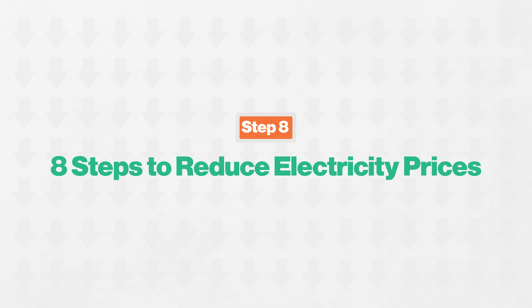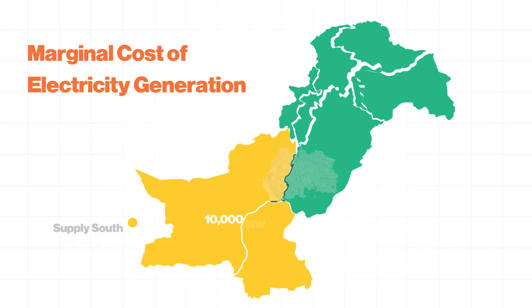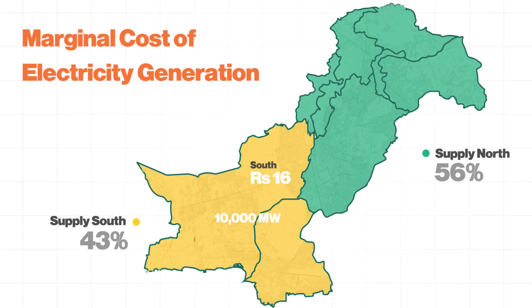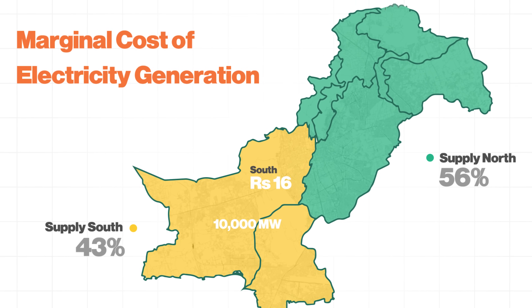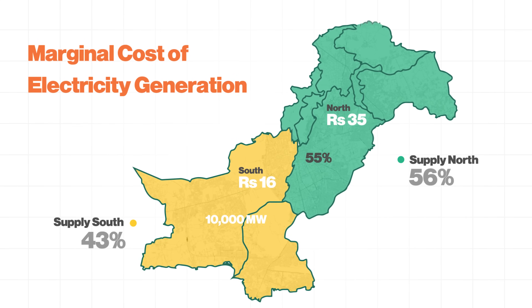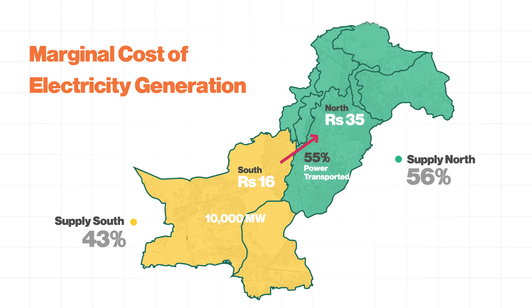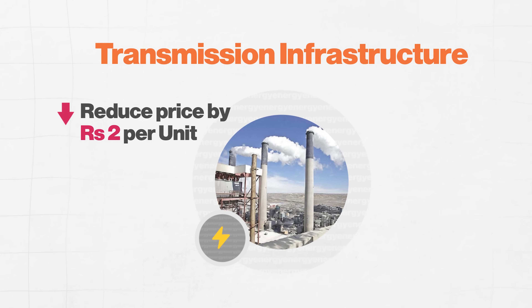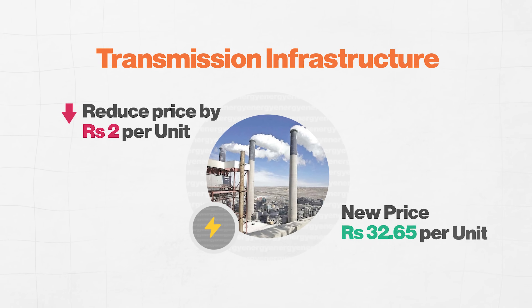Number eight: transmission infrastructure. We have discussed that the south generates 10,000 megawatts at a marginal cost of Rs.16 per unit, while the north's incremental generation cost is Rs.35 per unit. But because transmission infrastructure from south to north is incomplete, the north is still running on expensive capacity. To fix this, the saving would be Rs.2 per unit. The new price comes to Rs.32.65 per unit. If we can implement all these measures and increase demand, we can reach this target.